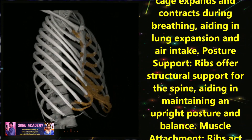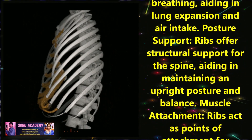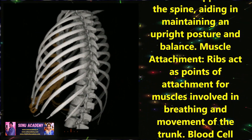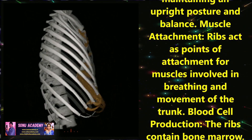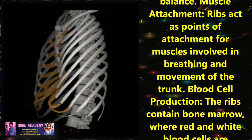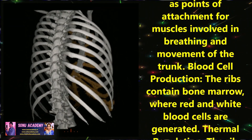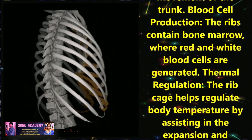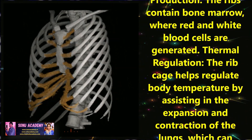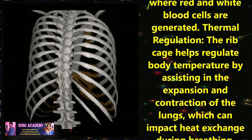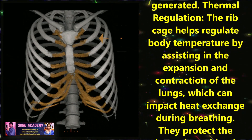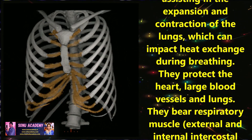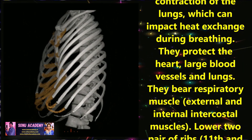Third, posture support: ribs offer structural support for the spine, aiding in maintaining an upright posture and balance. Fourth, muscle attachment: ribs act as points of attachment for muscles involved in breathing and movement of the trunk. Fifth, blood cell production: the ribs contain bone marrow where red and white blood cells are generated. Sixth, thermal regulation: the rib cage helps regulate body temperature by assisting in the expansion and contraction of the lungs, which can impact heat exchange during breathing.